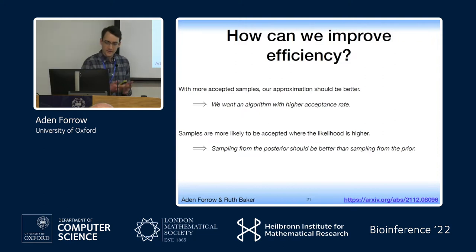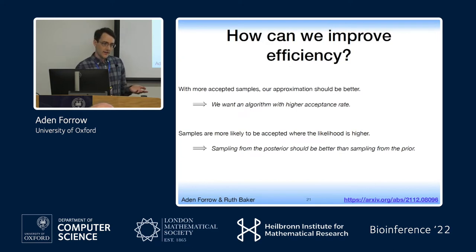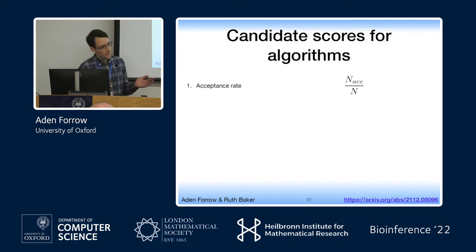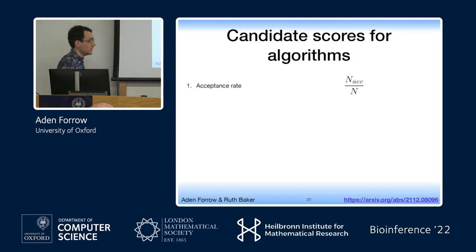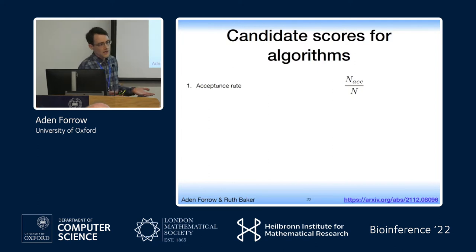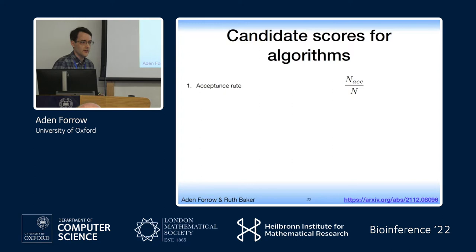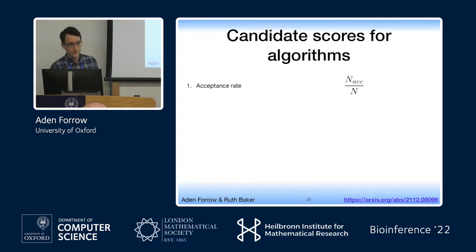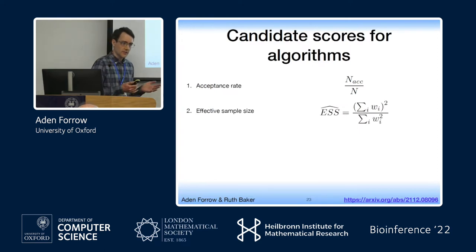This is a fairly standard classical intuition you can find all over in the literature, and I personally find very compelling. That intuition gives you a score for how well your algorithm is doing: the acceptance rate — how many simulations n did you have to do to get the number of accepted simulations that form your approximate posterior? One complication when you go beyond rejection sampling is that you often end up with weighted samples. A standard correction adjusts for variation in the weights to give you an effective sample size, ranging from one if all weight is on one particle up to the total number of accepted particles if weights are uniform.